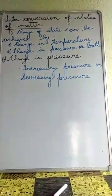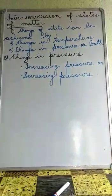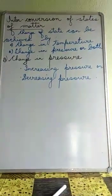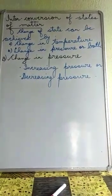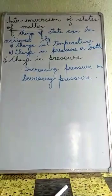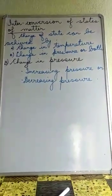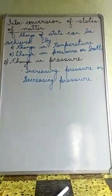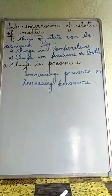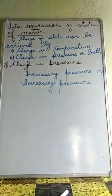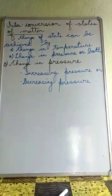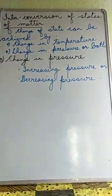Change in pressure also brings about a change in state of matter. The interparticulate space between particles of a gas can be decreased by increasing pressure, and thus the gas can be converted into liquid. CNG, LPG, and oxygen in cylinders are good examples in which gas is converted into liquid form and transported for various purposes. When a gas is compressed by applying pressure, heat is evolved, so simultaneous cooling is needed. When pressure is released or decreased, the liquid substance converts back into its gaseous state and is used.